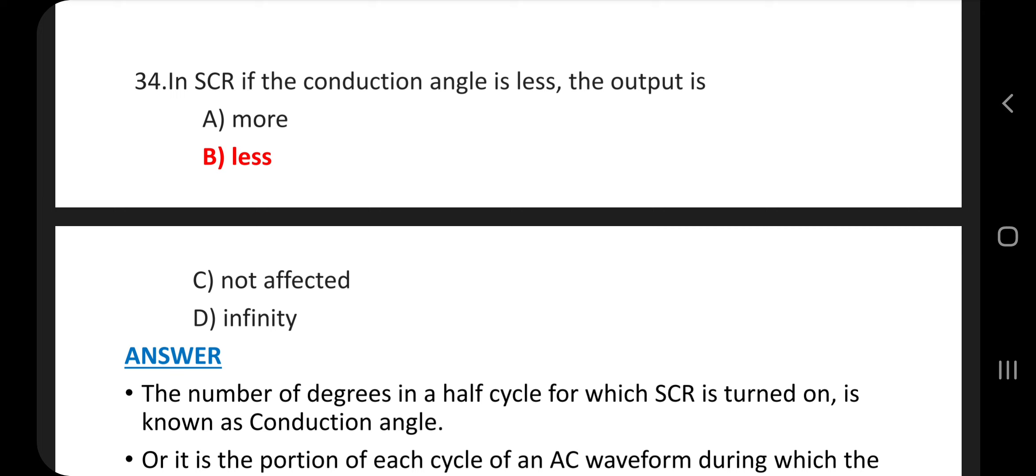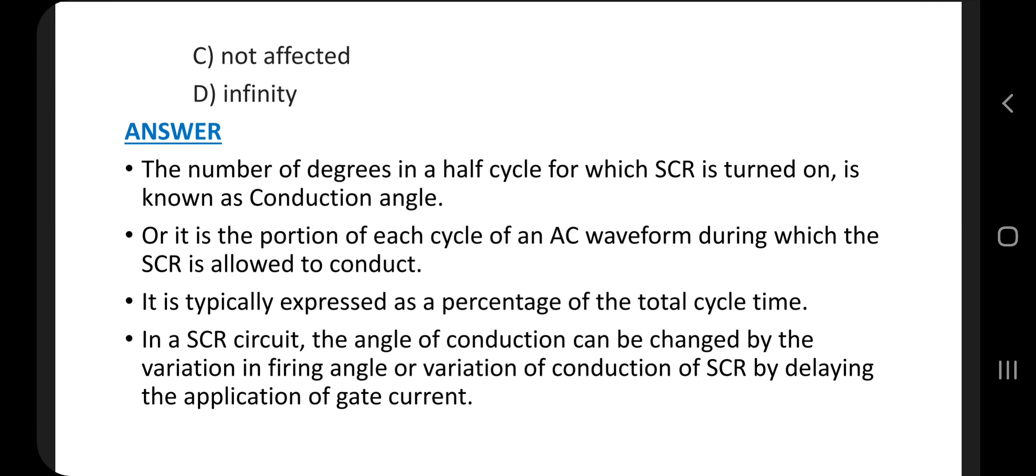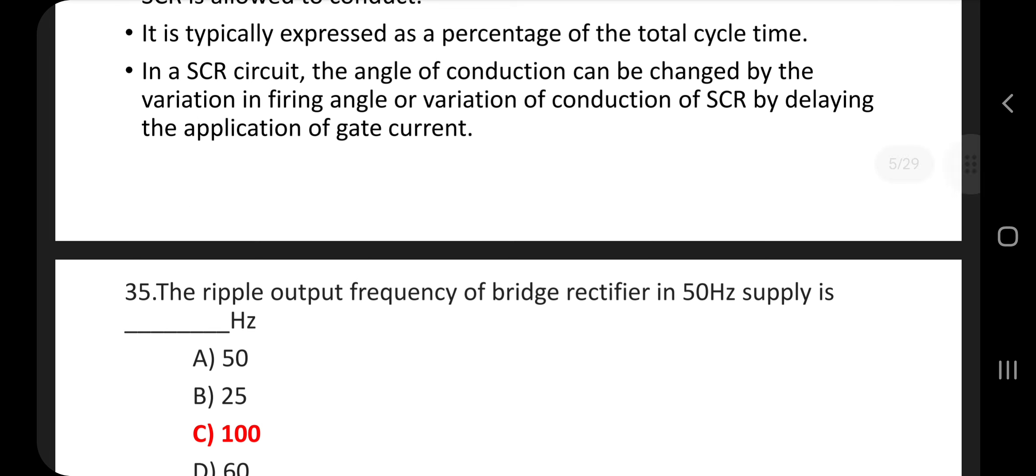Question number 34. In SCR, if the conduction angle is less, the output is, answer is option B, less. The number of degrees in a half cycle for which SCR is turned on is known as conduction angle. It is the portion of each cycle of an AC waveform during which the SCR is allowed to conduct. In a SCR circuit, the angle of conduction can be changed by the variation in firing angle or variation of conduction of SCR by delaying the application of gate current.